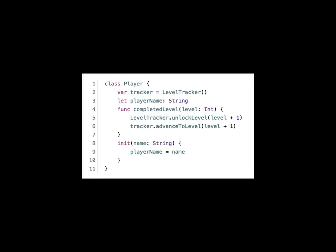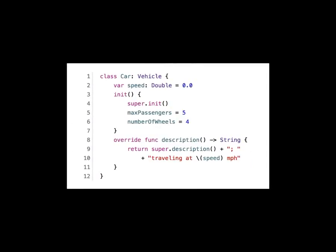The initializer is simply called `init`, and you can overload functions in Swift, giving multiple variations of `init` with different types of data and named identifiers. You override functions by marking the keyword `override`, and you can call superclass methods with the word `super`.